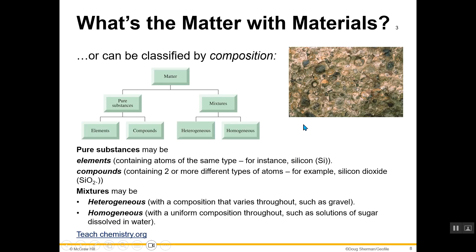When it comes to anything material — anything that has mass and volume — in addition to being classified according to state, matter can also be classified according to its makeup or what we call composition. That is demonstrated in a flow chart. Matter is at the top, and it has two main categories: pure substances and mixtures.